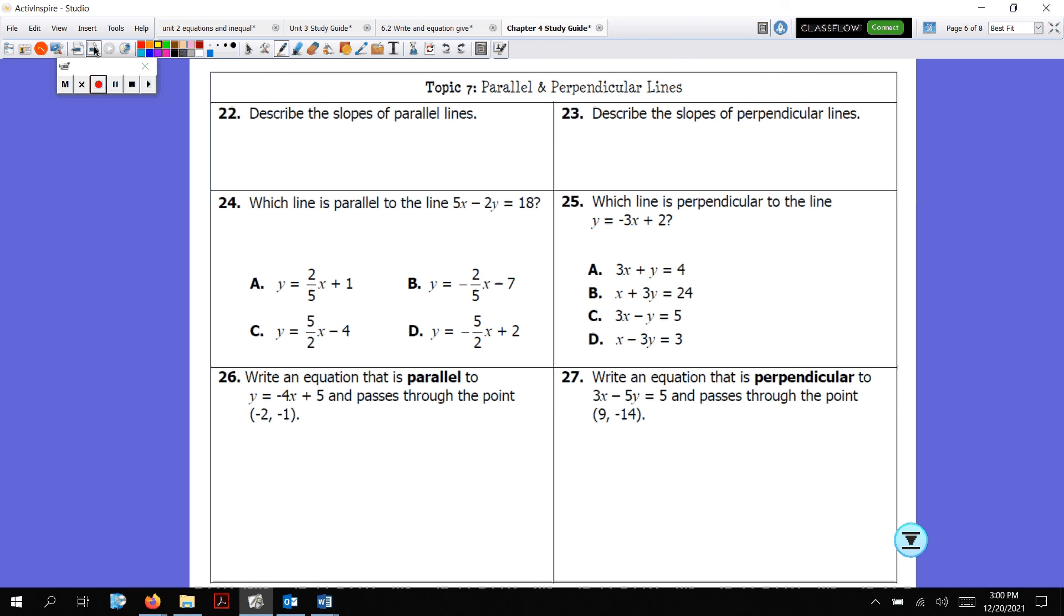Topic 7, parallel and perpendicular lines. Parallel lines have the same slope. Perpendicular lines have reciprocal opposites. So flip it and change the sign. Flip and change the sign. I know we've done this before. You should be okay with that. In order to pull the slope out of this line, you need to solve it for y for number 24. The same thing goes for number 27. In order to find the slope, you have to have that solved for y. Then you pull the slope and use the point.